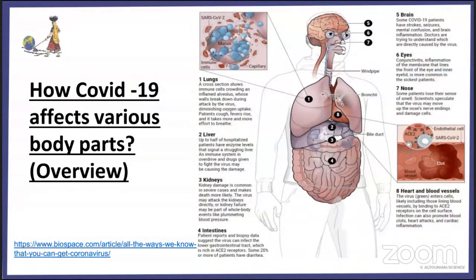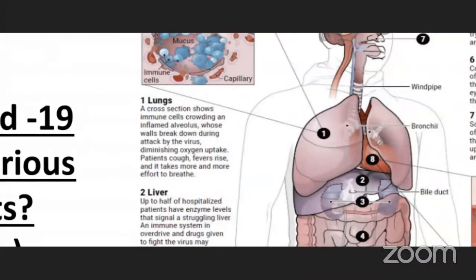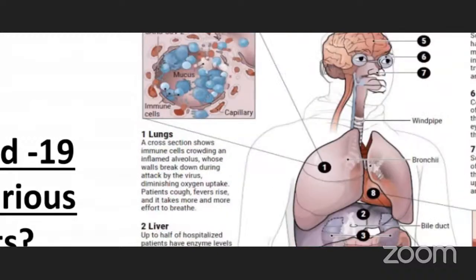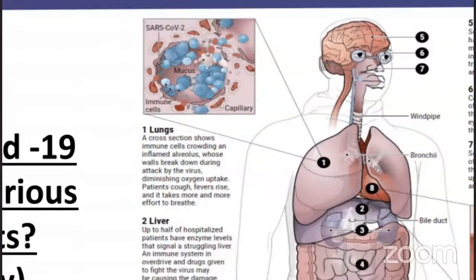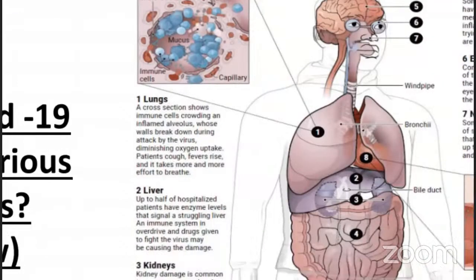How COVID-19 affects various body parts — this will be an overview. First, the lungs: a cross-section shows immune cells crowding an inflamed alveolus whose walls break down during the viral attack, diminishing oxygen uptake. Patients cough, fever rises, and it takes more and more effort to breathe, which is why respiratory problems occur during COVID-19.